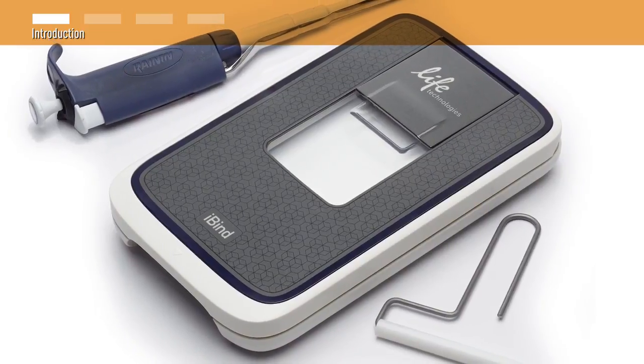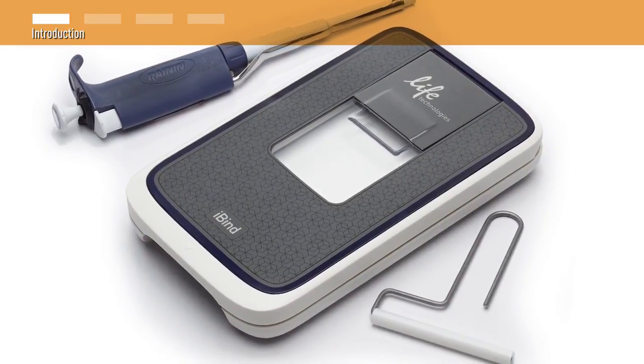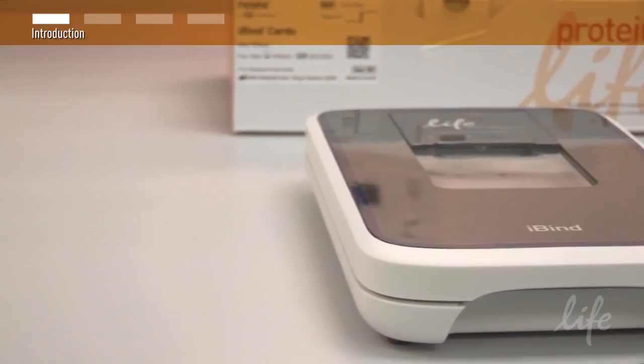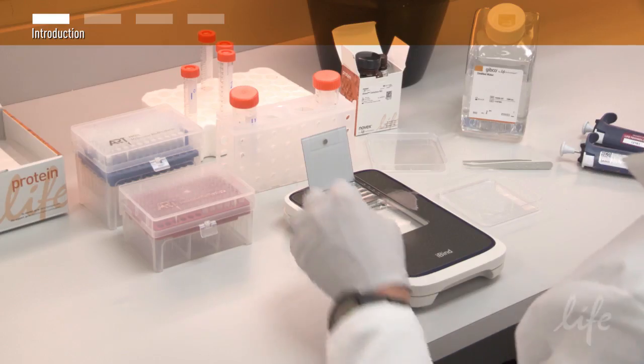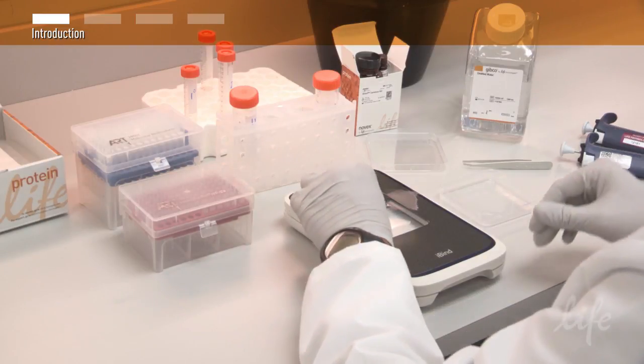The iBind Western system performs all immunodetection steps in a seamless sequential process. Blocking, primary antibody, secondary antibody, and wash steps are sequentially automated in a fully walk-away technique.